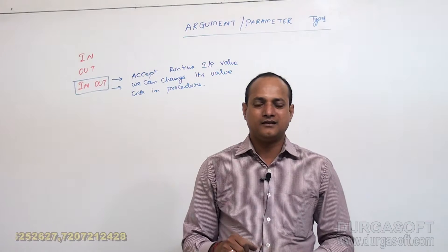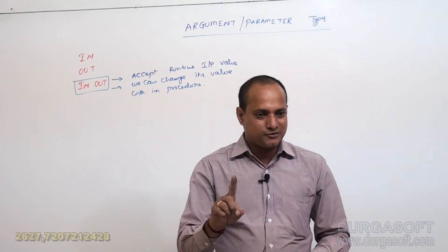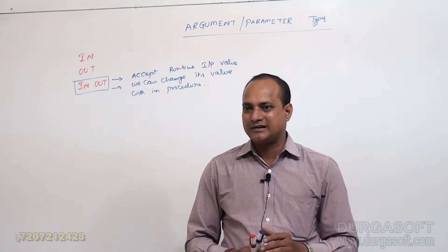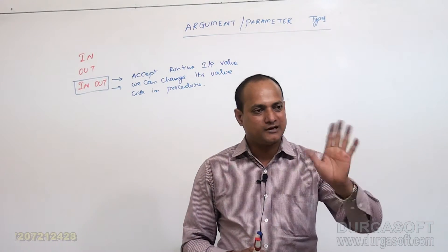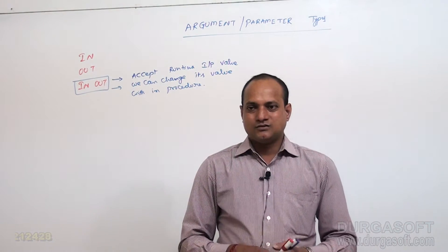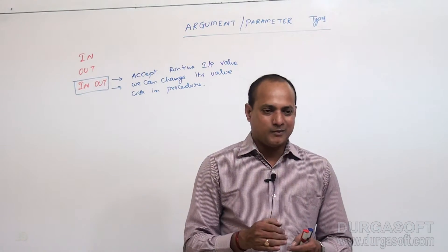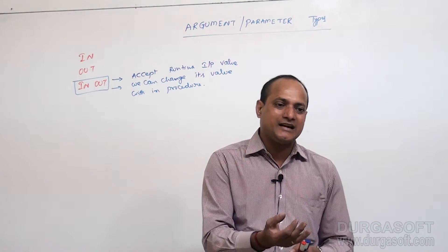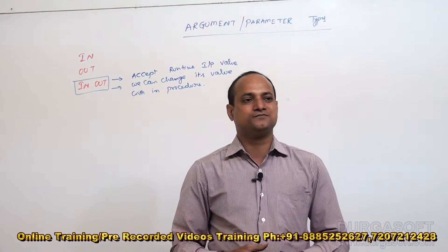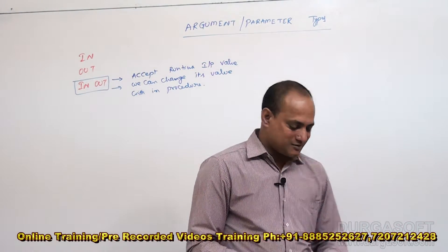One input argument — because account number is an IN-type argument and account number cannot be changed. Next, one IN-OUT type argument: it takes the amount, and once updated, the updated amount is given back to you. So for that, I am writing a procedure.